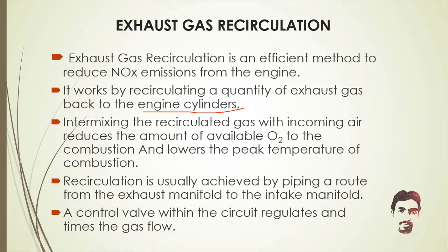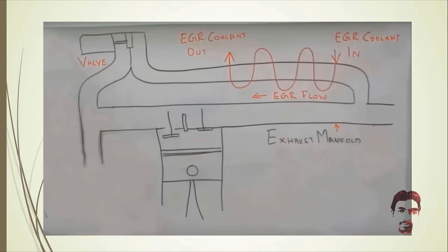Intermixing the recirculated gas with incoming air reduces the amount of available O2 to the combustion and lowers the peak temperature of the combustion. Recirculation is usually achieved by piping a route from the exhaust manifold to the intake manifold. A control valve within the circuit regulates the gas flow. EGR actually works by diluting nitrogen by supplying inert gases like CO2, which acts as an absorbent, reducing combustion heat and thereby reducing the chance of NOx being created.